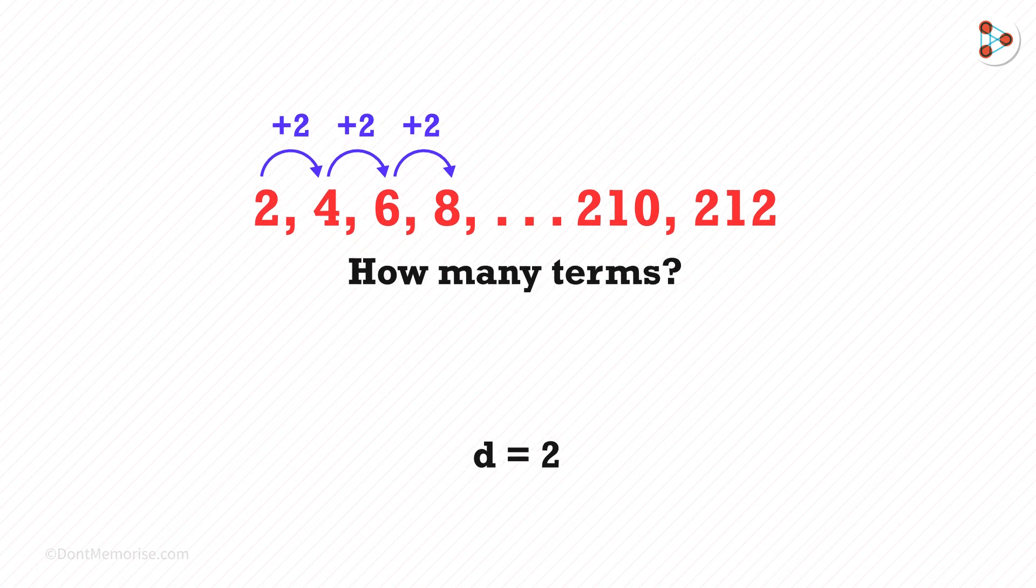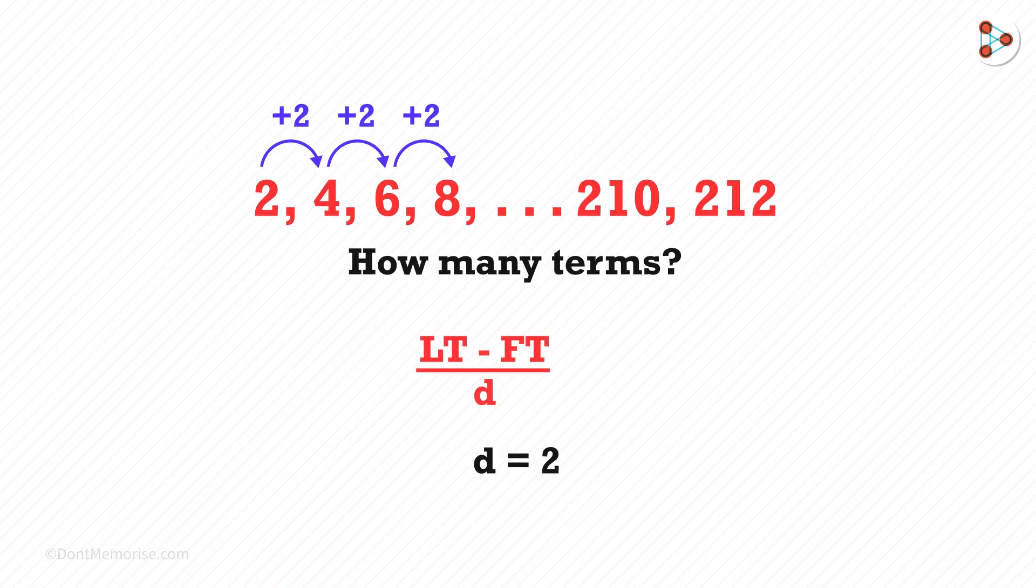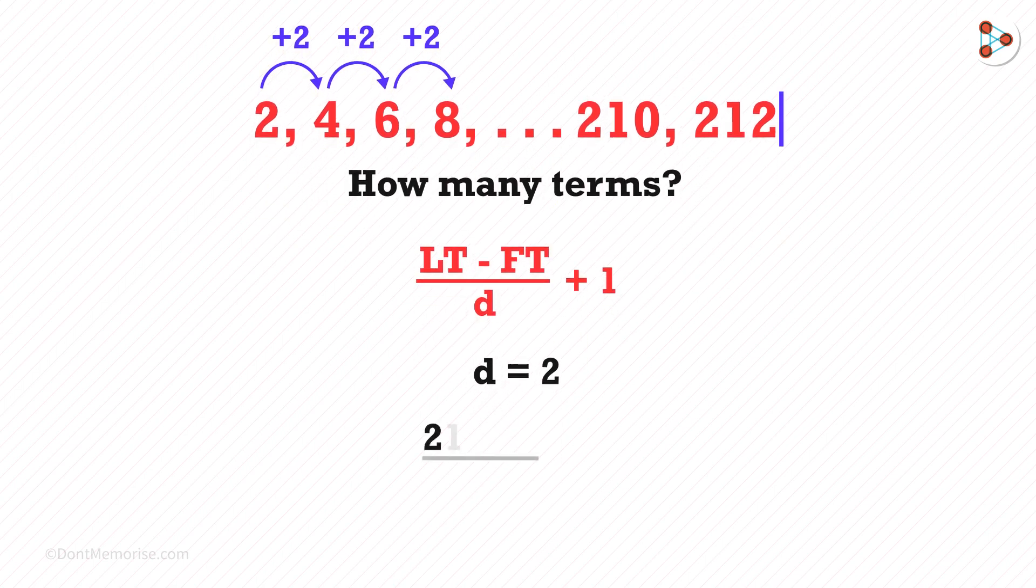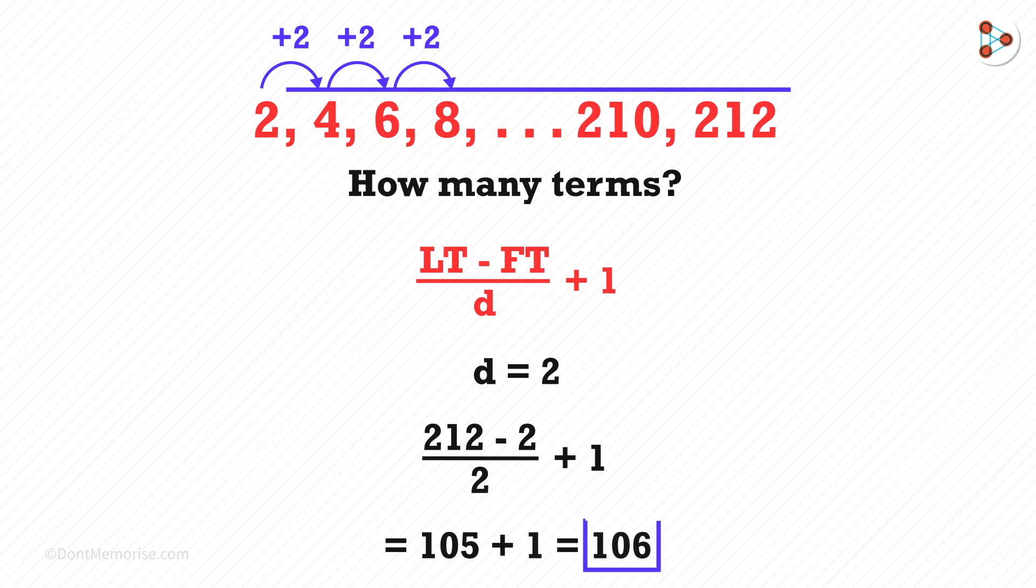The formula for this is last term minus the first term, the whole divided by D plus 1. The last term is 212, the first term is 2, and the difference is 2. By solving this, we get 105 plus 1, which gives us 106. So in this series, we have 106 terms including these two.